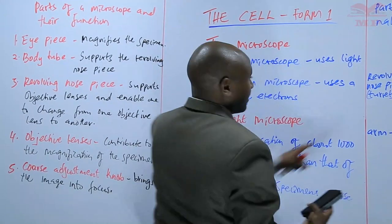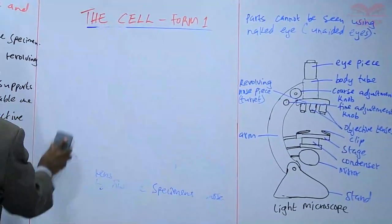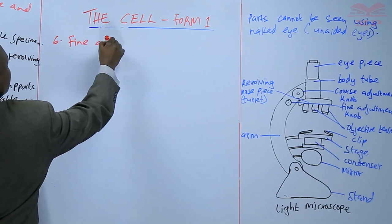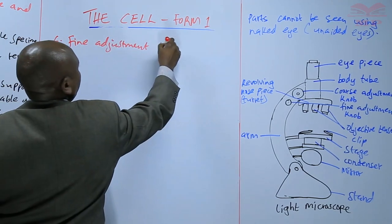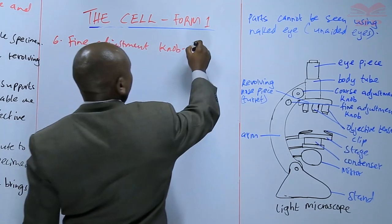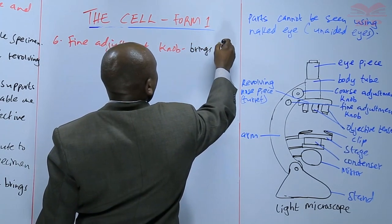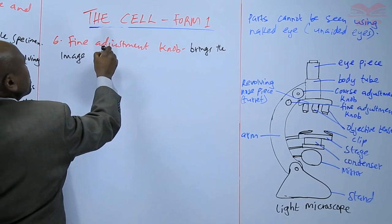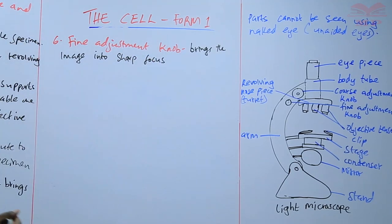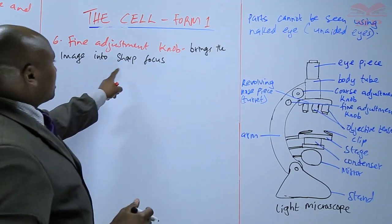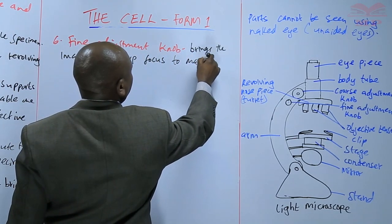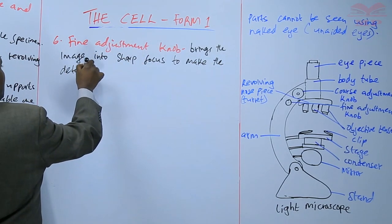Then we have the second, smaller knob — we refer to it as the fine adjustment knob. This is the one that brings the image into sharp focus. So you start by using the coarse adjustment knob to bring the image into focus, and then if you want to bring it into sharp focus, you use the fine adjustment knob to make the details clearer.